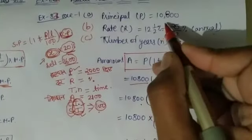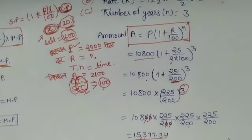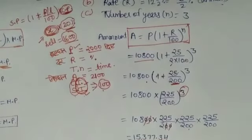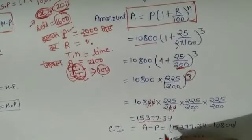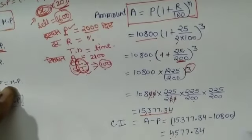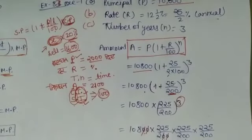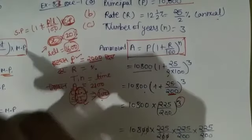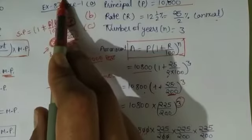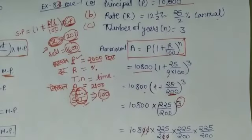He borrowed 10,800 and is returning 15,377. I am explaining some things in Hindi because Hindi medium students also watch this video. So the Compound Interest is 15,377 minus 10,800 = 4,577.34. That is the compound interest. That is all for today's class. Please watch this question twice as it will be very useful in upcoming classes. Your homework is question number 9 and 10, exercise 8.2, and question number 1 B and C. Thank you.